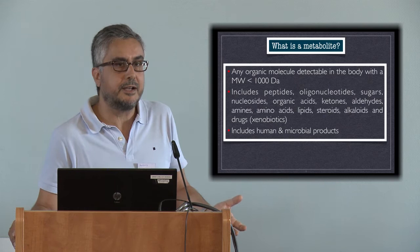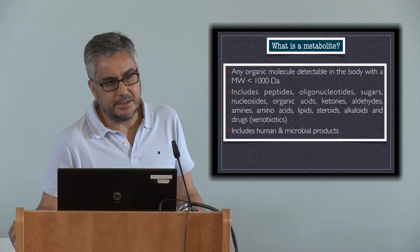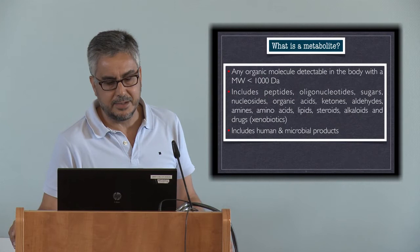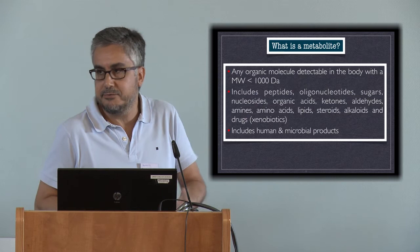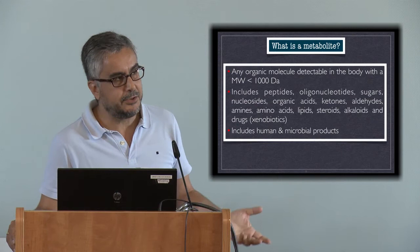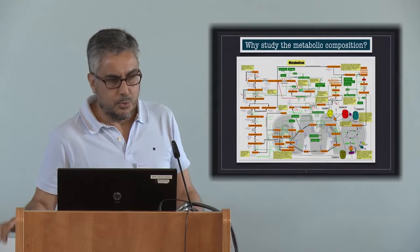In this context, a metabolite is any organic molecule that can be detected in the body with a molecular weight under 1 kilodalton or 1,000 daltons. That includes peptides, oligonucleotides, sugars, nucleosides, organic acids, amino acids, ketones, aldehydes, lipids, and drugs. A drug is no different than any compound you would find in the body. Actually, the molecular weight of drugs is normally around 500 daltons, so they are within the range of metabolites. That includes human and microbial products.